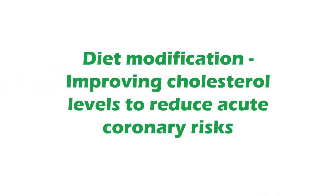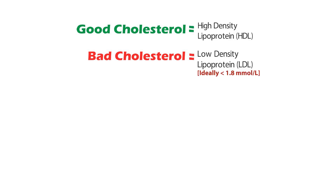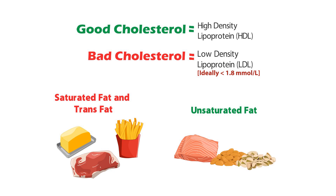Our food contains a mixture of different types of fats, and these affect our cholesterol levels. These fats have different impacts on your lipid profile. For example, saturated fat increases bad cholesterol level, trans fat increases bad cholesterol level and lowers good cholesterol level, and unsaturated fat can help lower bad cholesterol level.